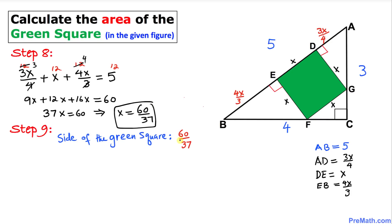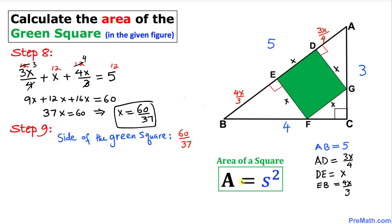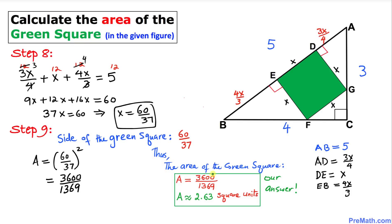Now calculating the area of the green square using the formula A = s²: A = (60/37)² = 3600/1369, which is approximately 2.63 square units. Thanks for watching, and please don't forget to subscribe to my channel for more exciting videos!